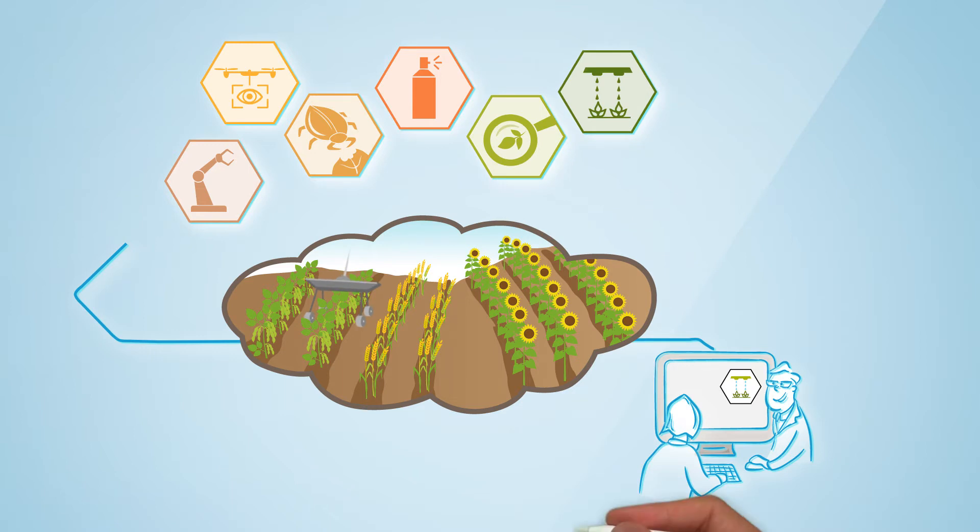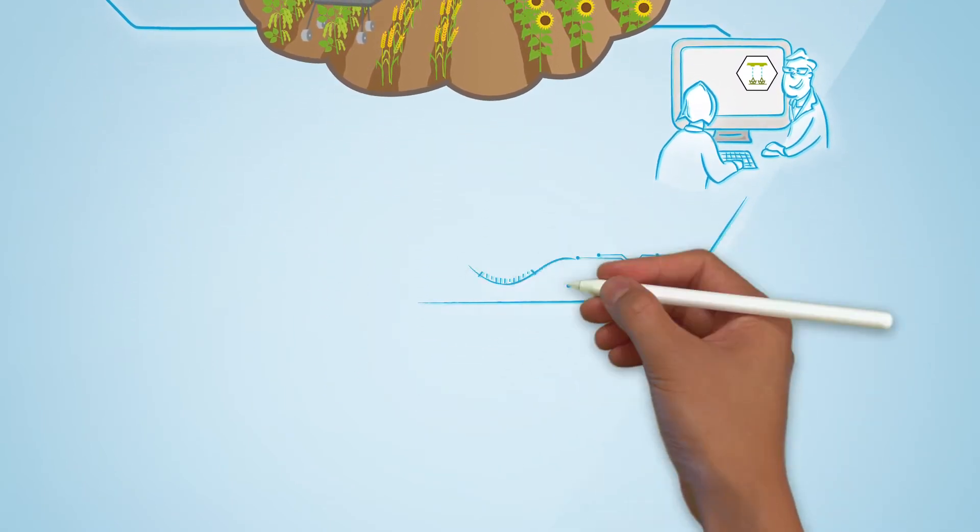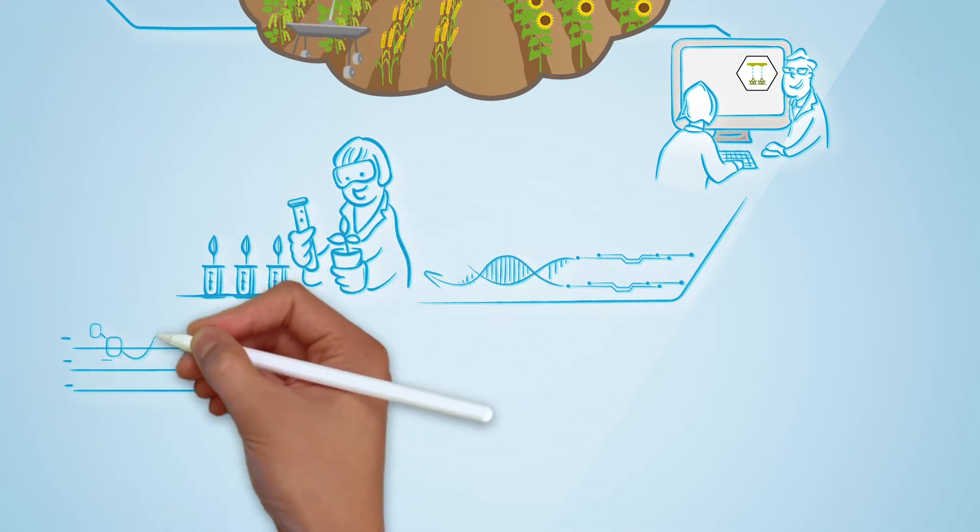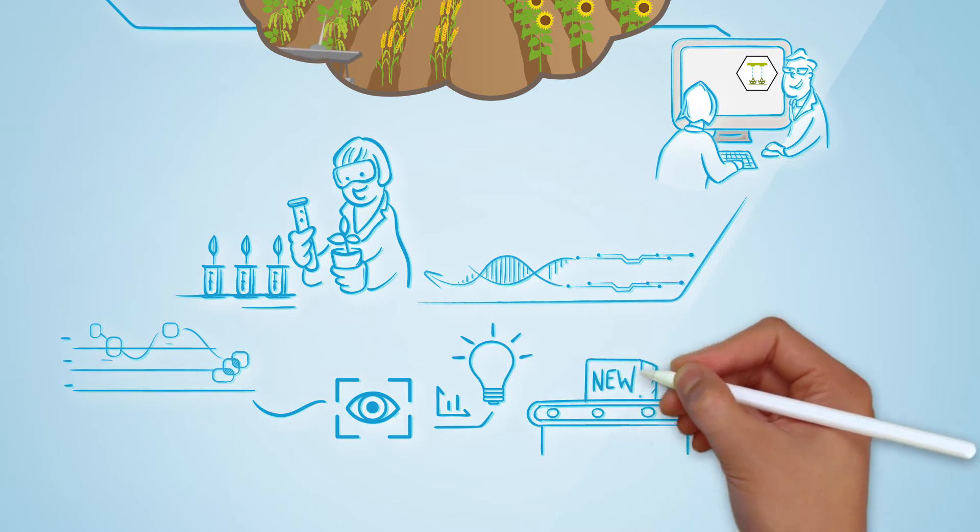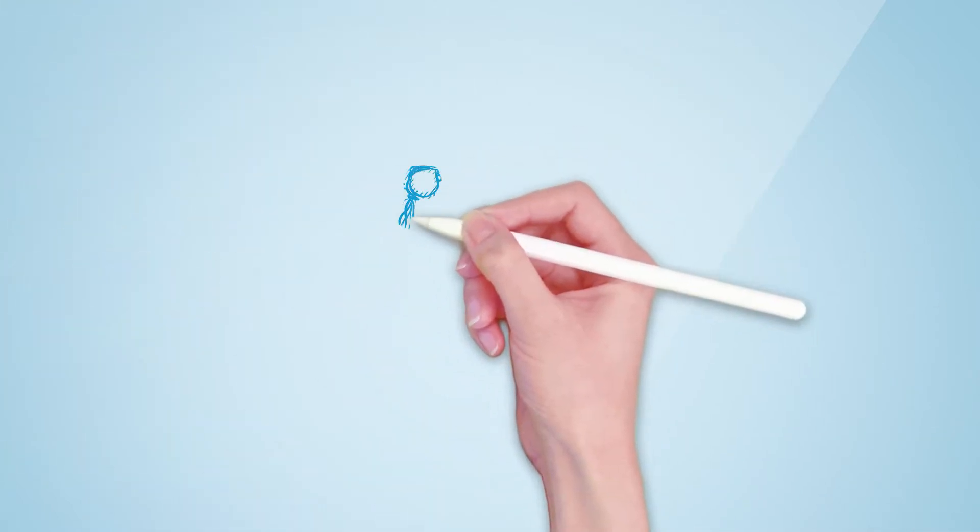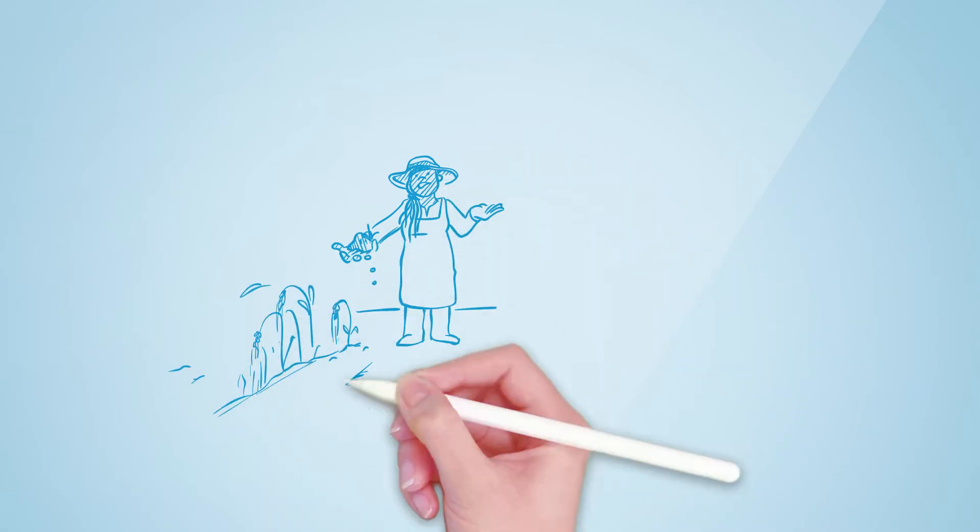They can share data instantaneously and make decisions faster than ever before. All of which leads to more comprehensive research, deeper insights, agile product development, better services, and better outcomes for both farmers and Syngenta.